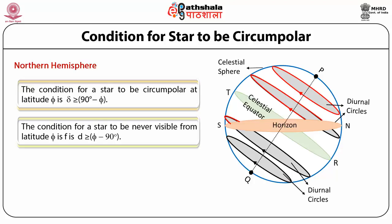For an observer at the North Pole, the latitude phi equals 90°. From the condition, the declination of a star must be greater than 0° for it to be circumpolar. This implies that for an observer at the North Pole, all stars above the celestial equator are circumpolar and all stars below the equator are never visible.